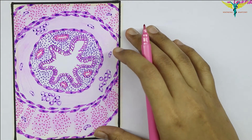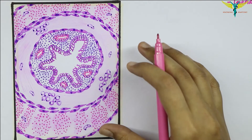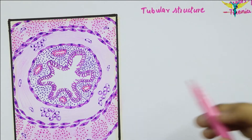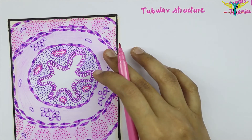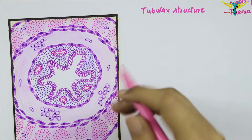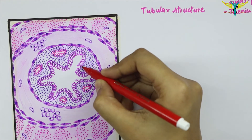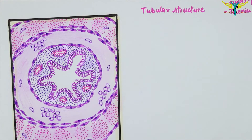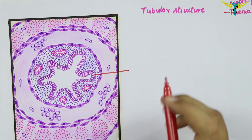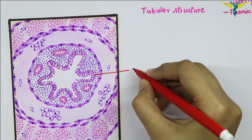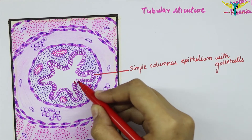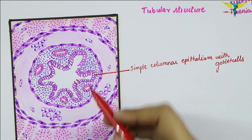The vermiform appendix is the narrowest part of the gastrointestinal canal and is a tubular structure. The innermost layer of the whole GIT is the mucosa, and in the vermiform appendix the innermost layer is also the mucosa. The innermost lining of this mucosa is lined by simple columnar epithelium with goblet cells — you can see the presence of goblet cells here.